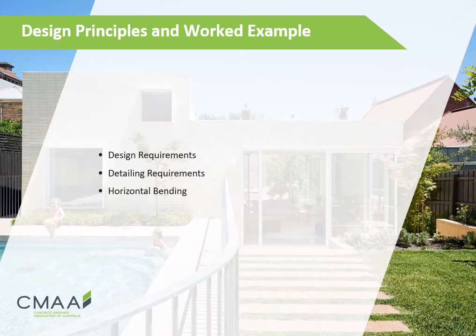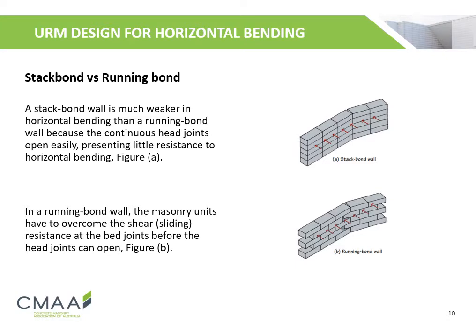Now we will look at some design principles, which include design requirements, detailing requirements, and a worked example on horizontal bending. A stack bonded wall is much weaker in horizontal bending than a running bond wall because the continuous head joints open easily, presenting little resistance to horizontal bending. This is shown in Figure A.